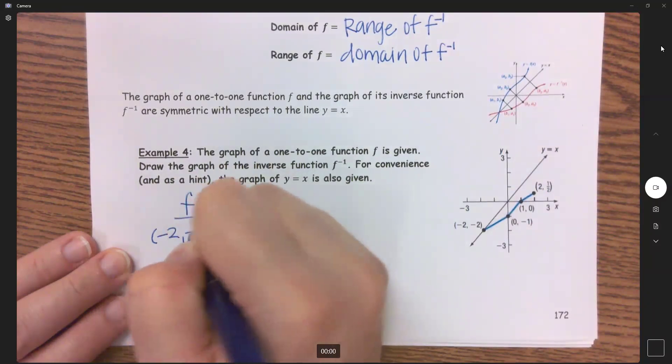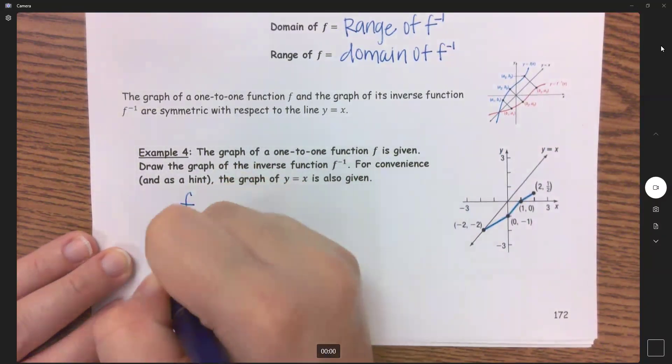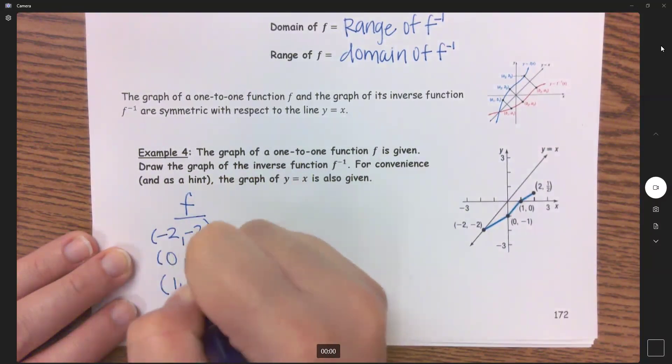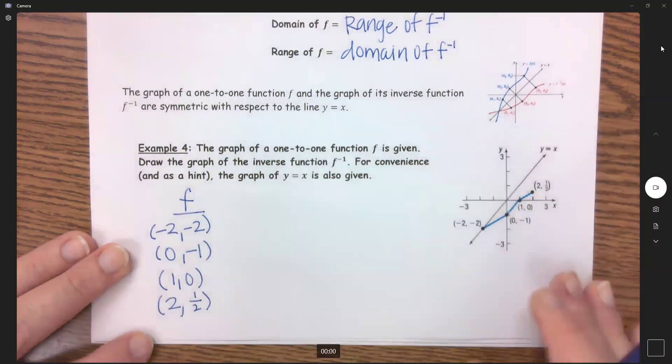So we have negative 2, negative 2, 0, negative 1, 1, 0 and 2, comma, 1 half.